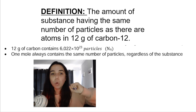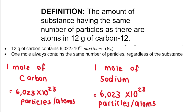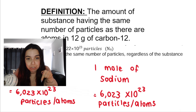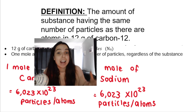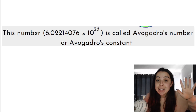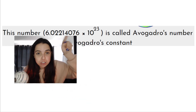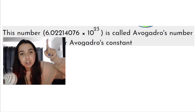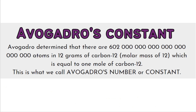One mole always contains the same number of particles regardless of the substance. So one mole of carbon means 6.022 times 10 to the 23 atoms of carbon. One mole of sodium means 6.022 times 10 to the 23 atoms of sodium. That number has a name — it's called Avogadro's number, or Avogadro's constant: 6.022 times 10 to the 23, often rounded to 6.023 times 10 to the 23. It's named after Avogadro, who determined that there were that many atoms in 12 grams of carbon-12.